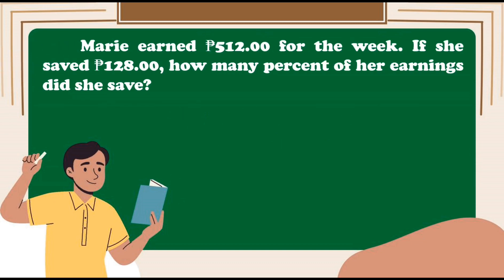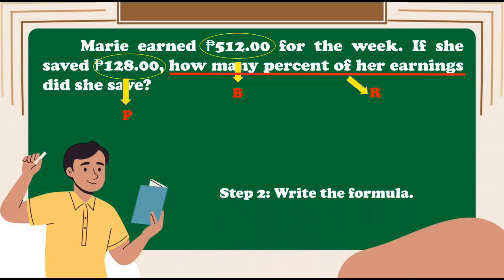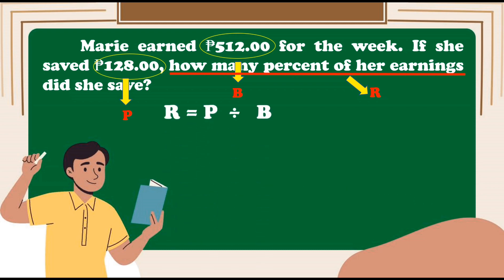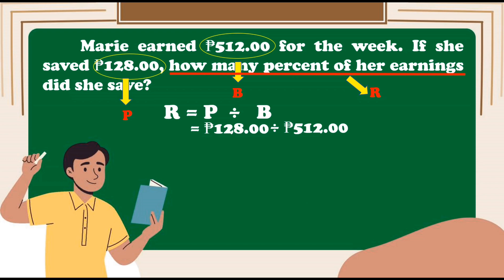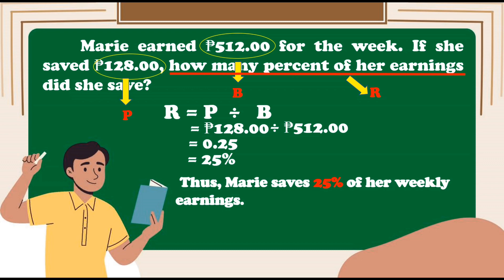Let us try another one. Marie earned 512 pesos for the week. If she saved 128 pesos, how many percent of her earnings did she save? First step: identify the missing term. From this problem, 512 pesos is our base and 128 pesos is our percentage. Therefore, the unknown is the rate. Second step: write the formula — Rate is equal to percentage divided by base. We divide 128 pesos by 512 pesos, and the answer is 0.25. Third step: change the decimal to percent — we have 25%. Thus, Marie saves 25% of her weekly earnings.